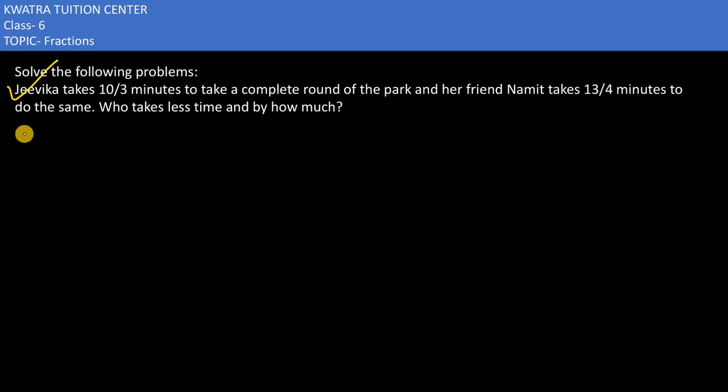Here in the next part, it says Jirika takes 10 by 3 minutes to take a complete round of the park and her friend Namit takes 13 by 4 minutes to do the same. Who takes less time?